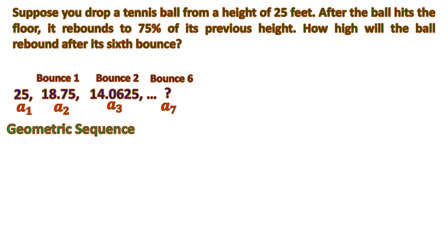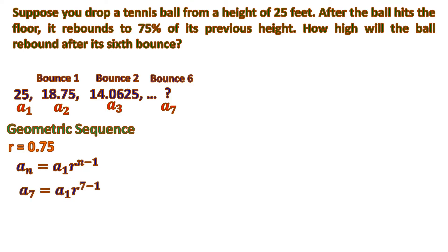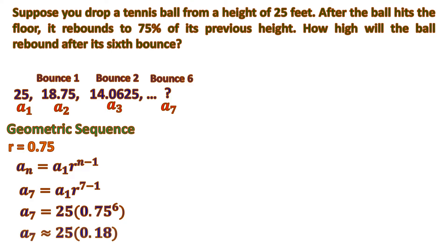This is actually a geometric sequence because it has a common ratio of 0.75. We're going to solve for the seventh term, so we substitute n by 7. Then we substitute further: A sub 1, the first term, is 25, and R, the common ratio, is 0.75. Then we get 0.75 to the power of 6, which is 0.177 and so on.